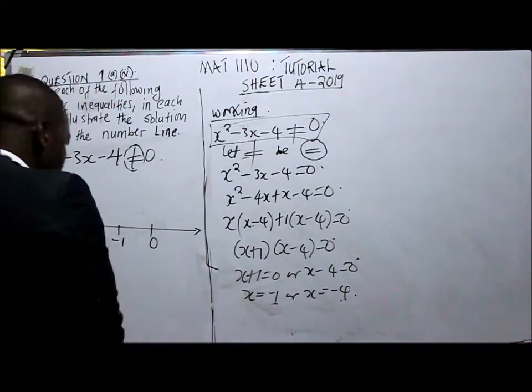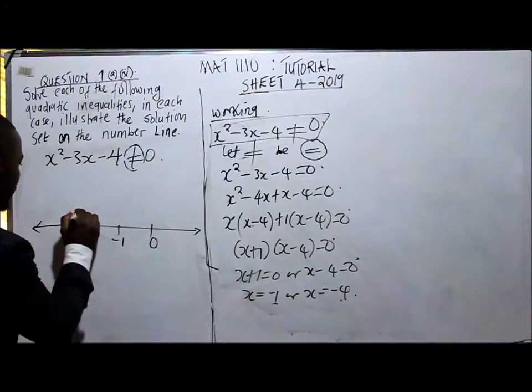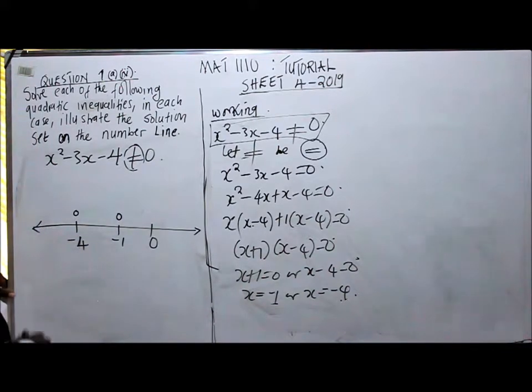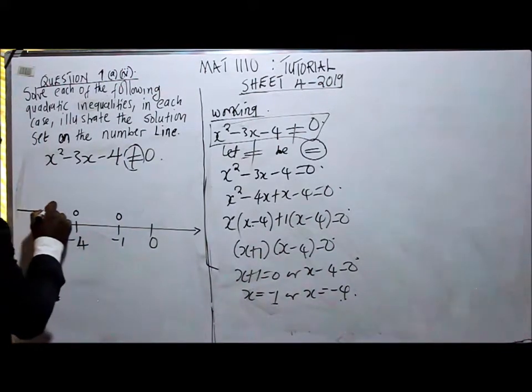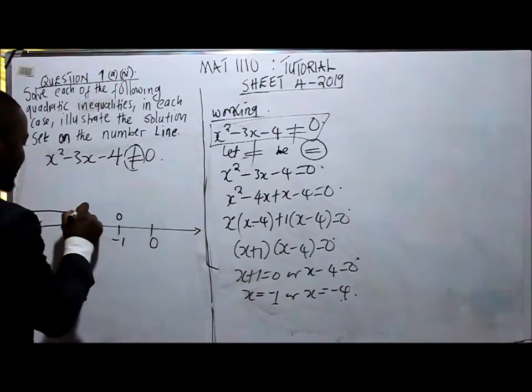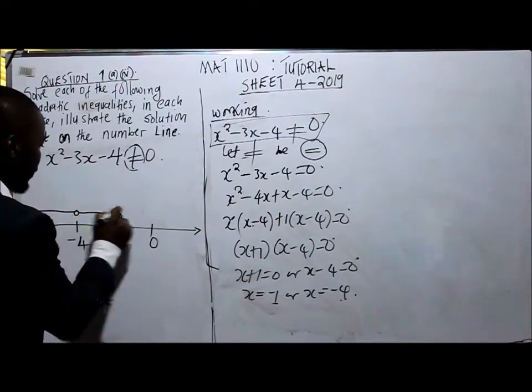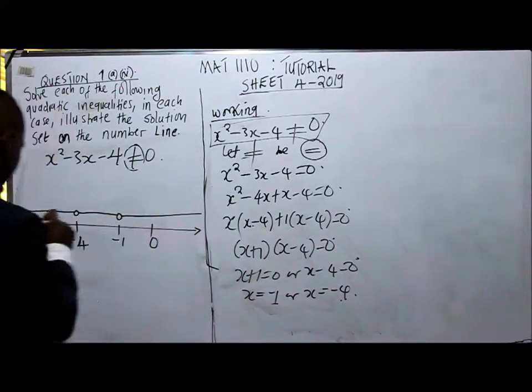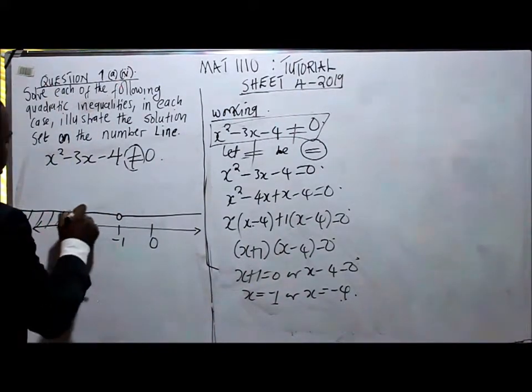Okay, so this means that from -4 and -1, we write an open interval. So this equation can accept numbers from negative infinity, open interval between -4 and -1, and then open interval from -1 to positive infinity.